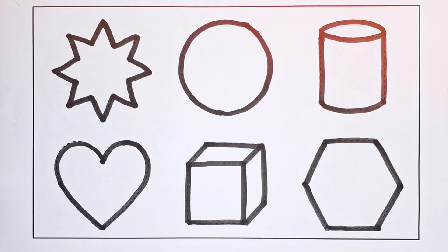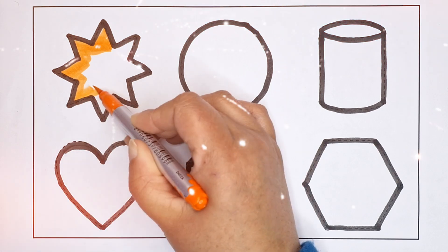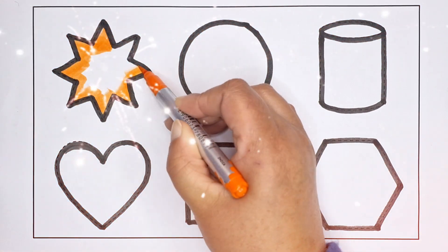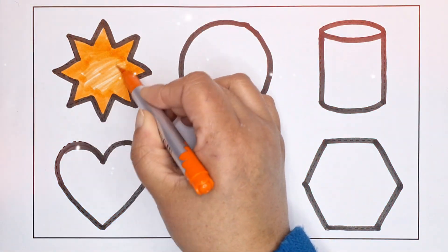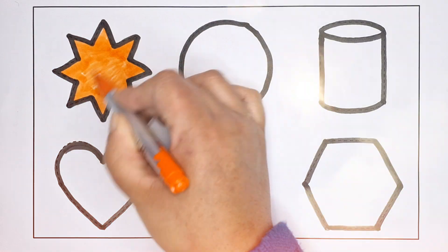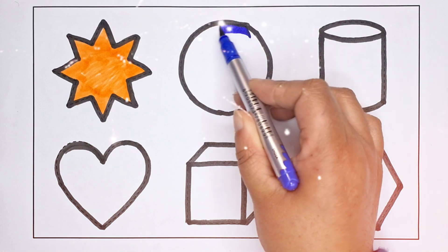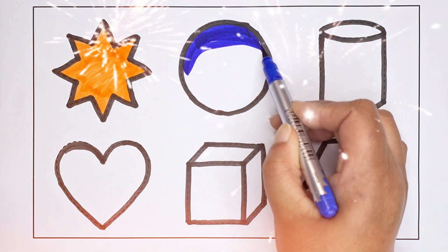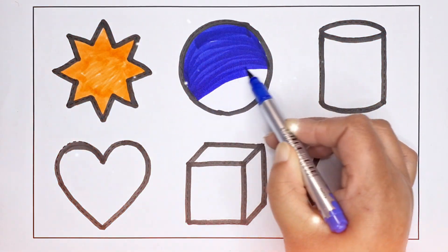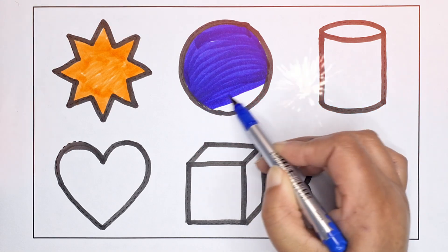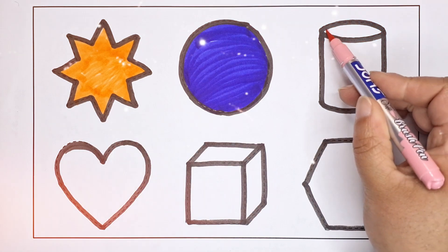Hexagon, Orange Color. Eight-Point Star, Blue Color. Circle, Light Pink Color.